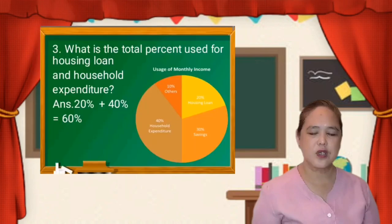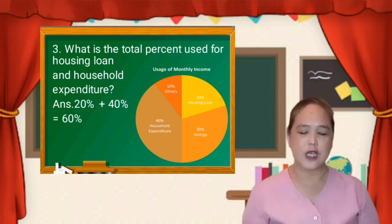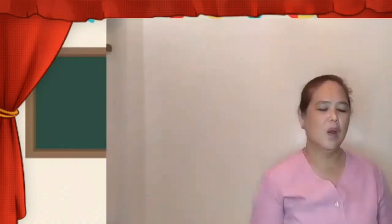For number 3, what is the total percent used for housing loan and household expenditure? Just add the total percent for housing loan and the household expenditure. For housing loan we have 20% and for household expenditure we have 40%. So 20% plus 40% is equal to 60%. The total is 60%.